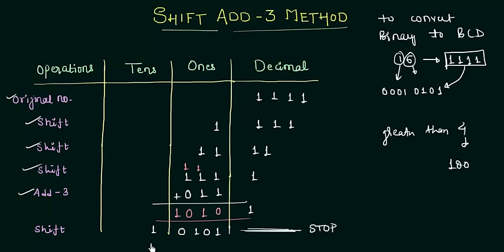Let's analyze what we have. In the tens column we have 1, which means it is 1. In the ones column we have 0101, which is 5. So it clearly means we have converted this binary number 1111 to the BCD 10101.